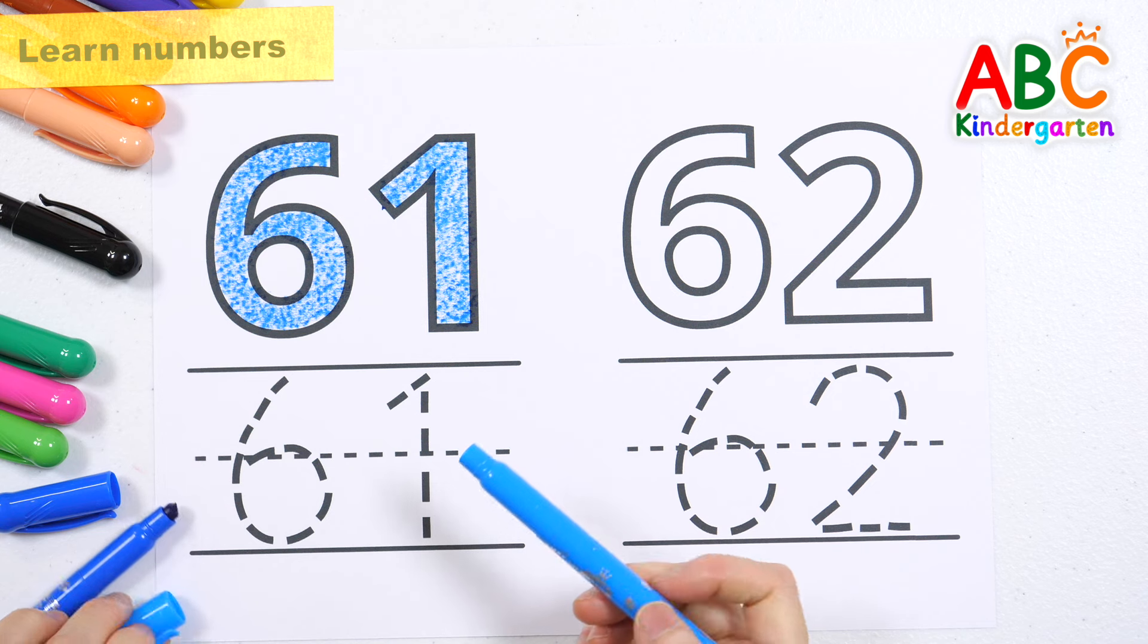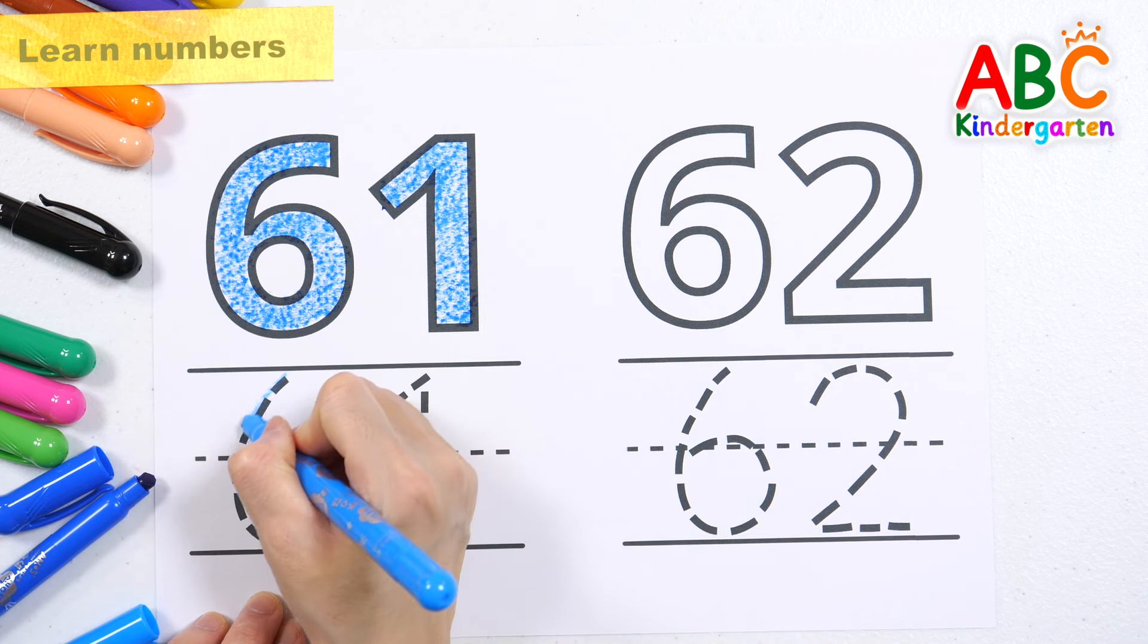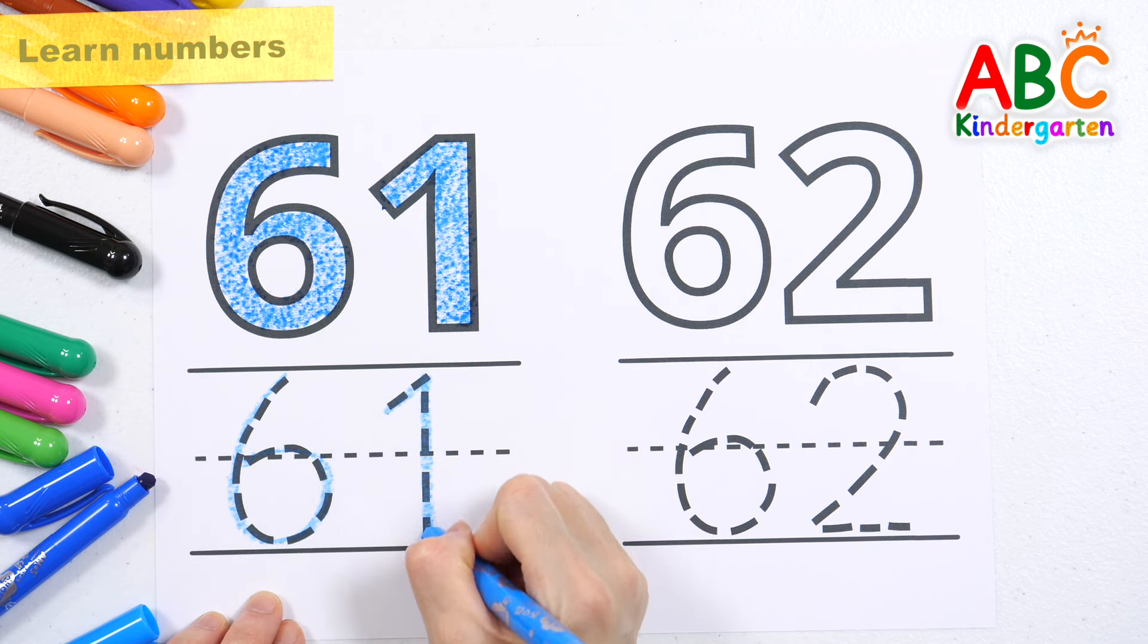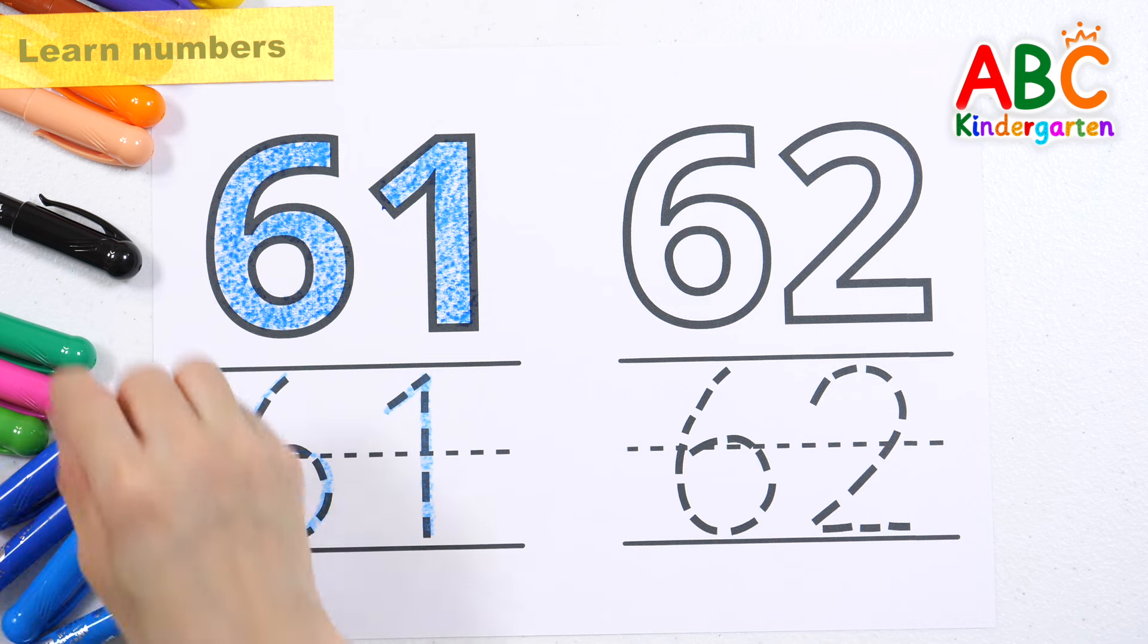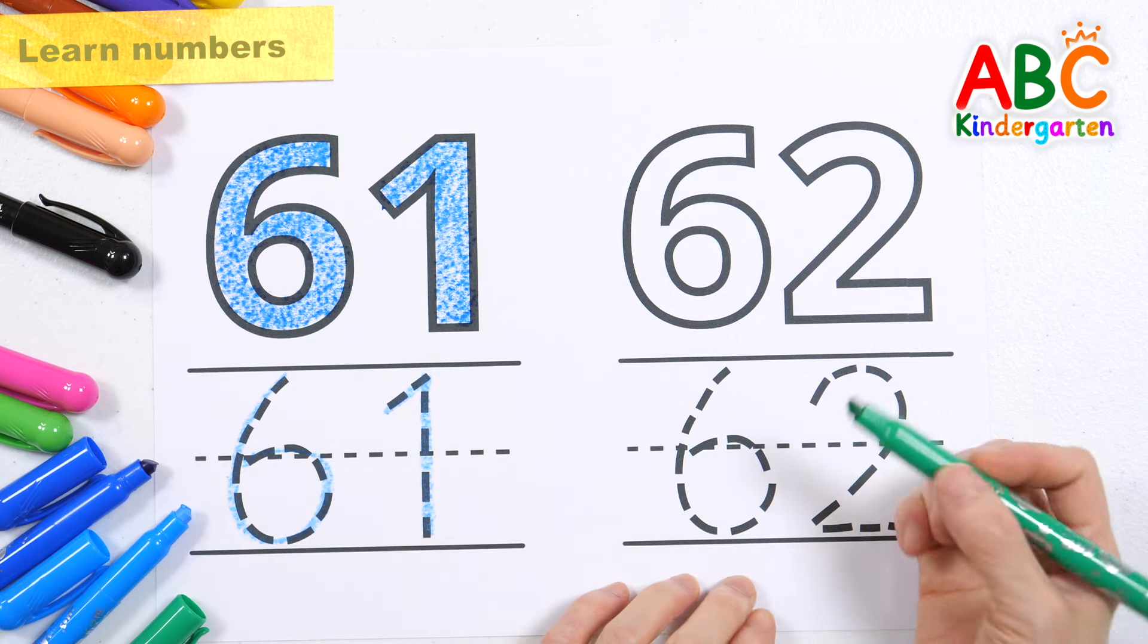Shall we write the numbers along the dotted lines? 61, 61. What color should we color 62? Green sounds good!